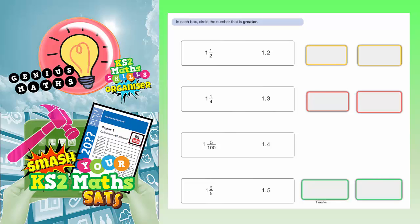Question 17. In each box, circle the number that is greater. Now, obviously we've got a mixture of fractions, like a half, a quarter, five hundredths, three-fifths, but also we've got decimals: 0.2, 0.3, 0.4, 0.5.